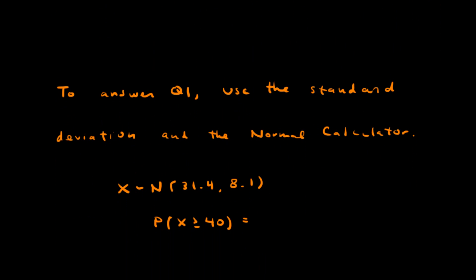To answer question one, it's pretty straightforward. You just use the standard deviation, the mean, use the information provided, and the normal calculator. So again, we said that the mean is 31.4, the standard deviation is 8.1. To find the probability that X is greater than 40, just use the normal calculator.